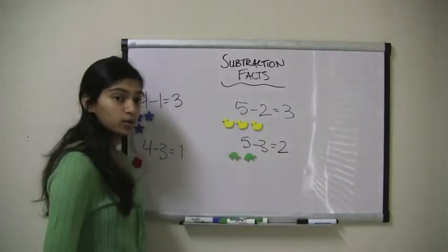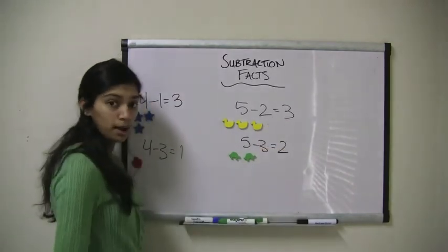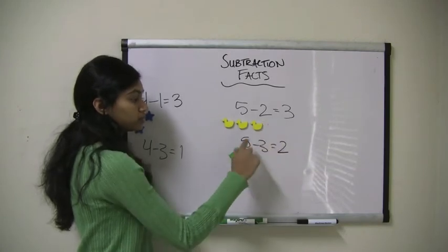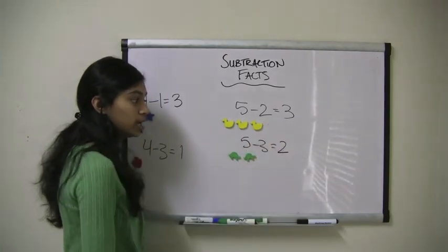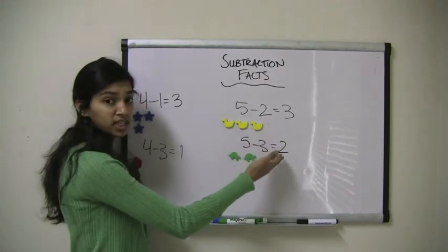So again, we see that if we flip these two numbers, the problem remains true. So 5 minus 2 equals 3, and we flip these, so 5 minus 3 equals 2. And both of these statements are true.